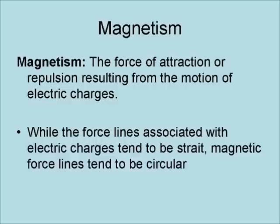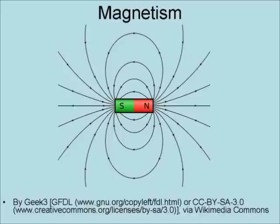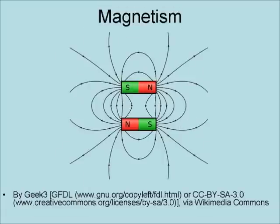While the force lines associated with electric charges tend to be straight, magnetic force lines tend to be circular. This is an illustration of the magnetic field around a cylindrical magnet. Note that there are two poles instead of one. The magnetic force lines are depicted as going from north to south in a circular pattern.